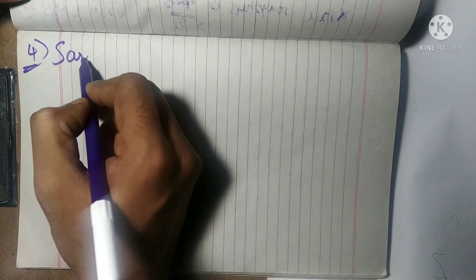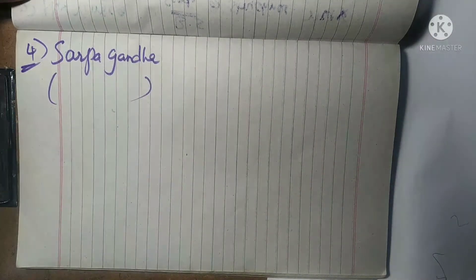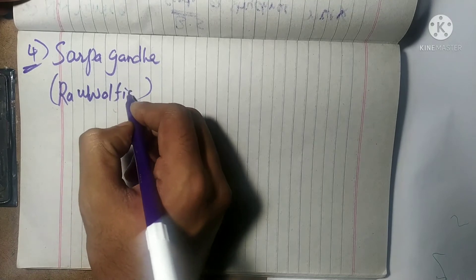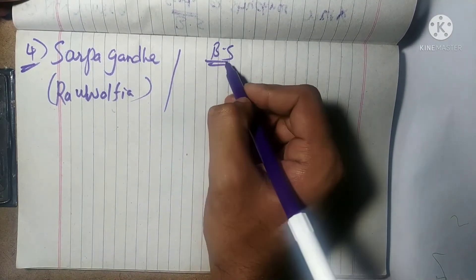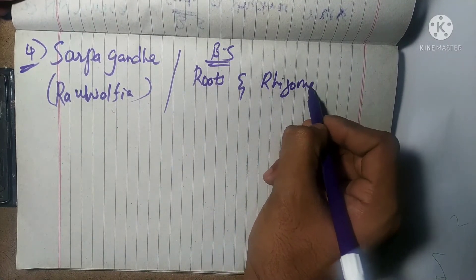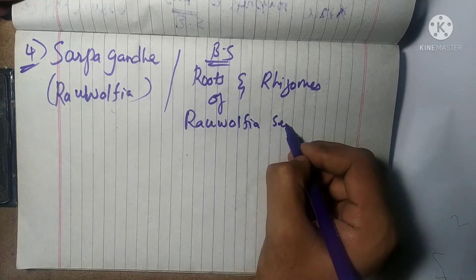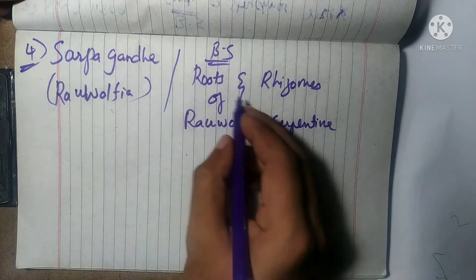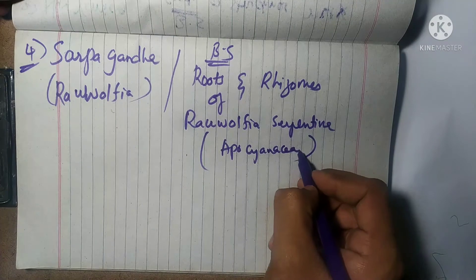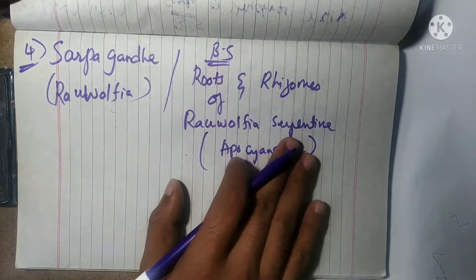The fourth one includes Sarpagandha, also known as Rauwolfia. Its biological source is the roots and rhizomes of Rauwolfia serpentina. This Rauwolfia serpentina belongs to the family Apocynaceae. So these are the biological sources of Sarpagandha.